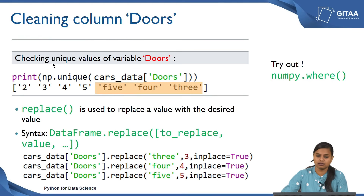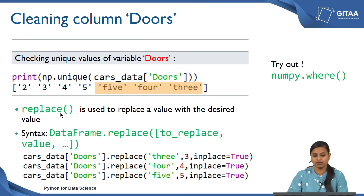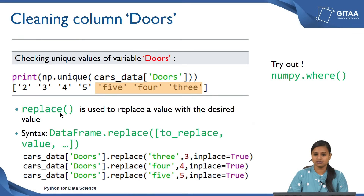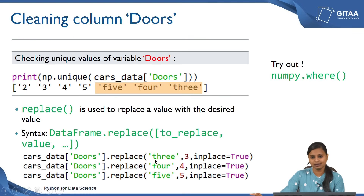Let me recap what we saw in the doors column. We checked the unique values of doors and it turned out to have values in both numbers and strings — those strings represent 5, 4, and 3. There might be cases where numbers were wrongly typed as strings. If you want consistent numerical values like 2, 3, 4, and 5, you can use the replace command in Python to change all string values to numerical values. The syntax is: dataframe.replace(value_to_replace, replacement_value).